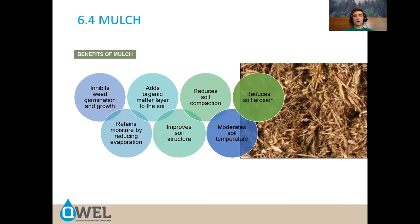The benefits of mulch are many: it inhibits weed growth and weed seed germination, though weeds that do grow will be easy to remove. Mainly, mulch retains moisture and prevents evaporation. Organic mulch adds organic matter over time, which improves soil structure and reduces soil compaction. It also prevents soil from getting too hot or too cold. Be cautious about using mulch to reduce erosion on slopes — that benefit is largely overstated, and erosion can happen right under the mulch. Other techniques may be more appropriate.